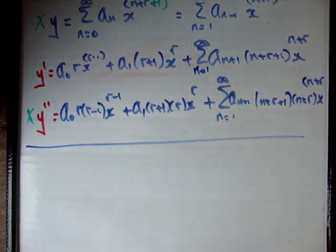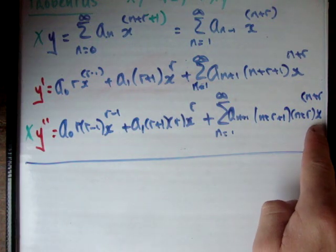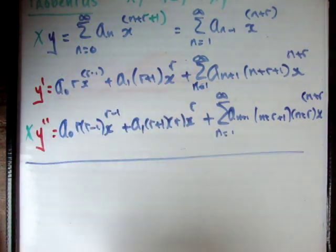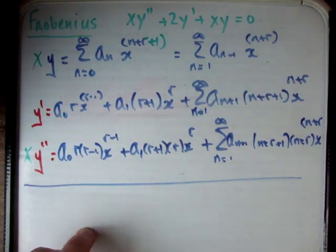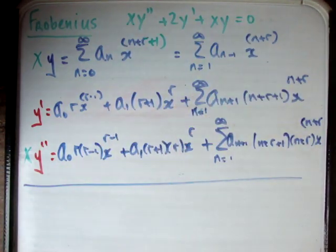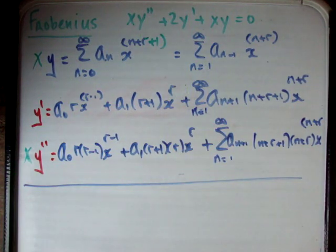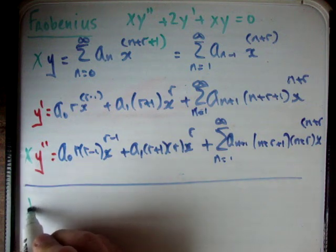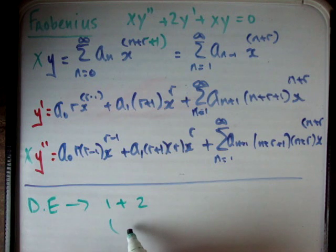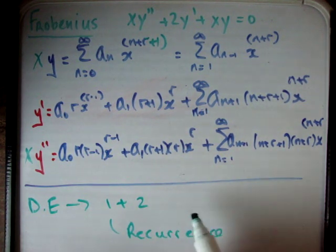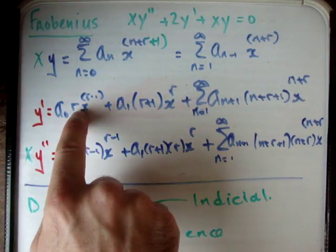That was actually pretty straightforward — we applied the same method each time. Now we have three terms, all starting at n = 1, all having power x^(n+r), and each having first-term constants at the beginning. We now plug them into the differential equation. Rather than writing all seven terms at once, I'll split it into equation 1 (the recurrence relation) and equation 2 (the indicial equation). The recurrence relation is the equation that the series themselves satisfy, while the indicial equation comes from the isolated constant terms.